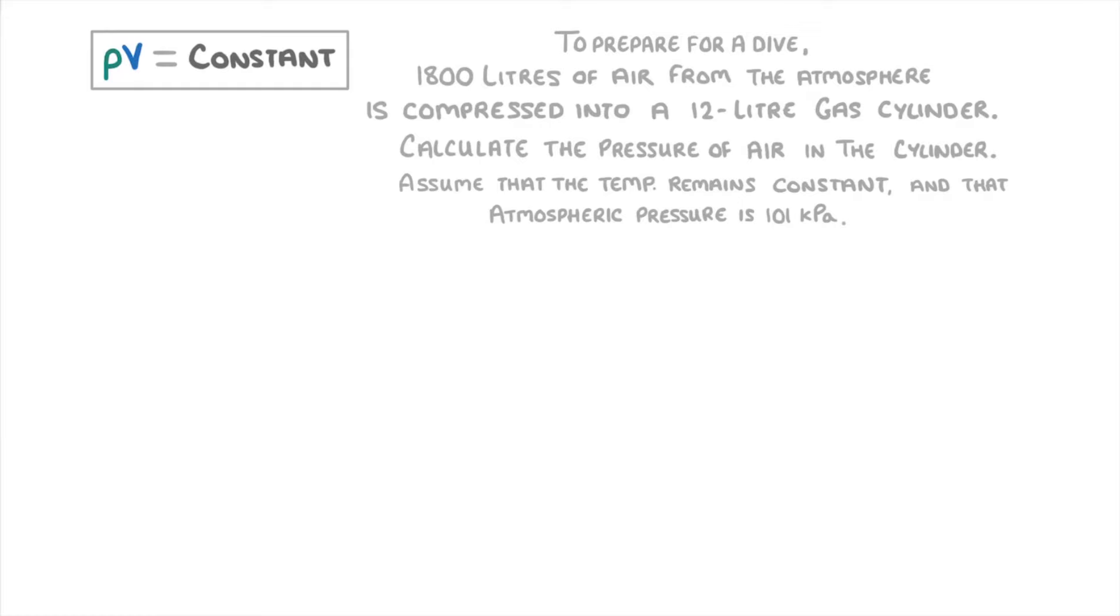In this question, it's a bit more difficult to see which values we're meant to use where. We're basically taking a volume of 1800 liters of atmospheric air and compressing it into the much smaller volume of 12 liters, at an unknown pressure. The key thing to notice, though, is that atmospheric air will have a pressure of 101 kilopascals.